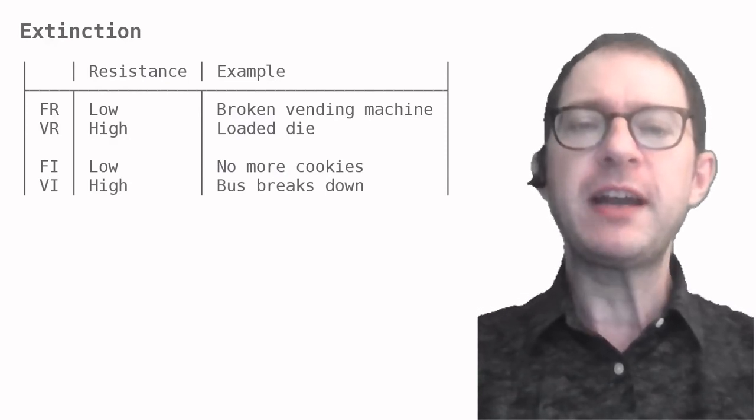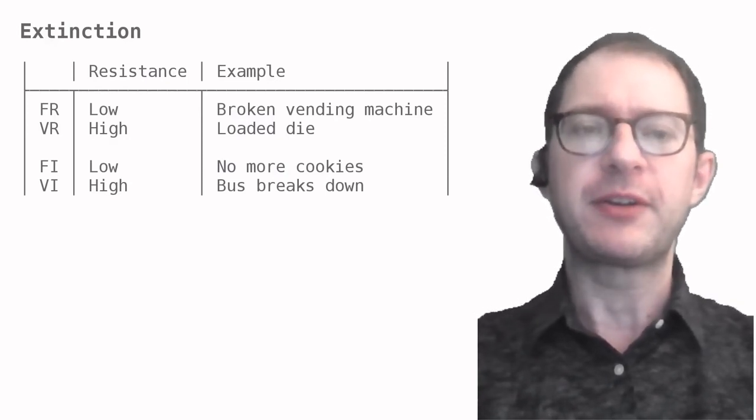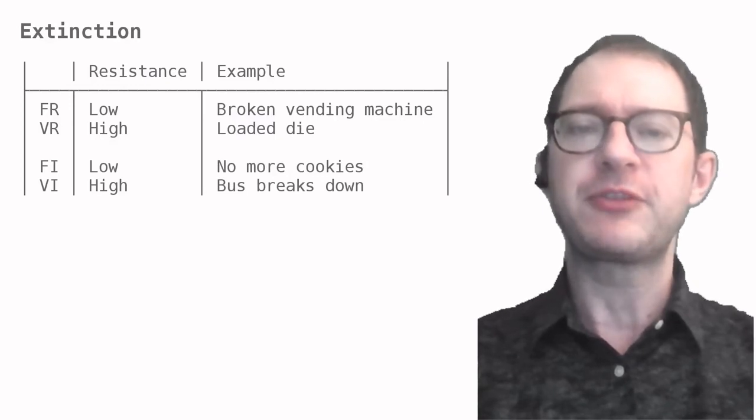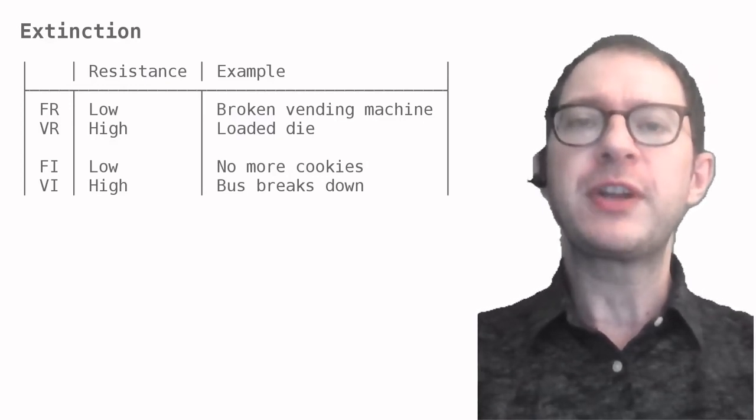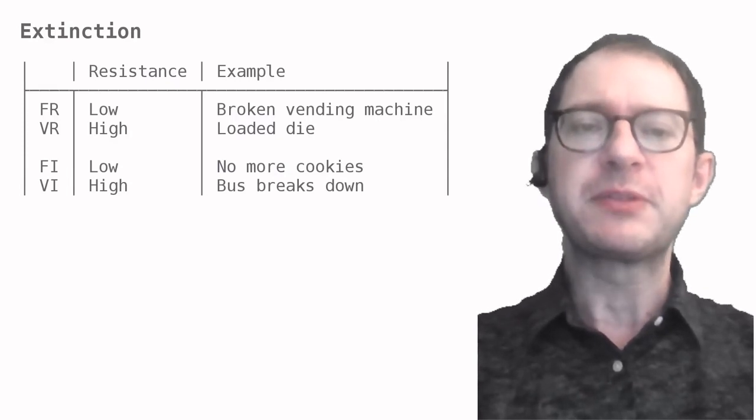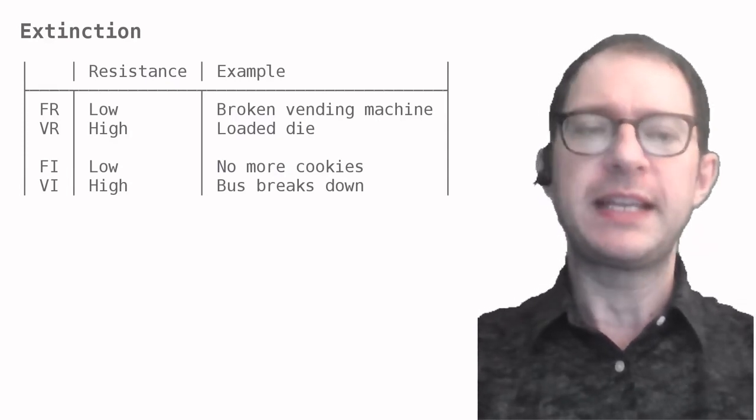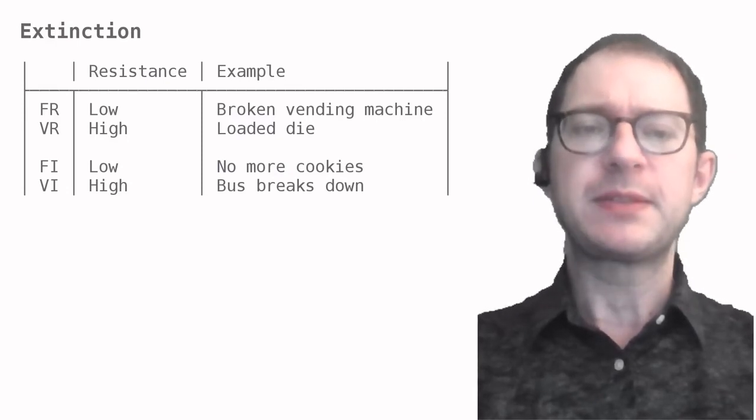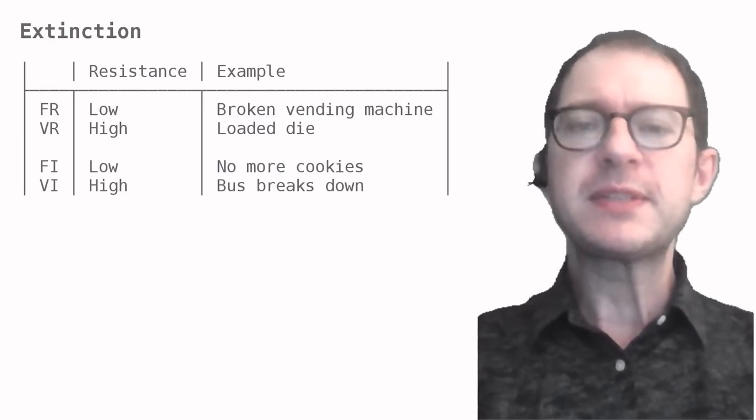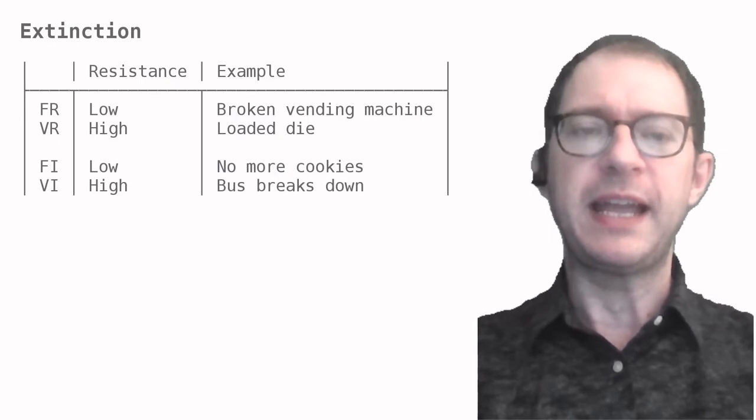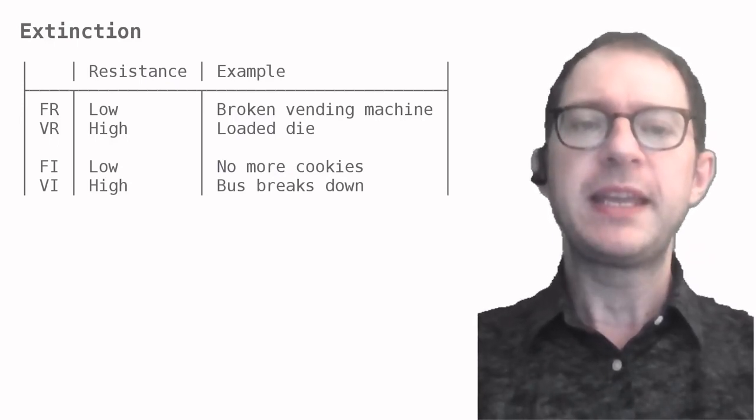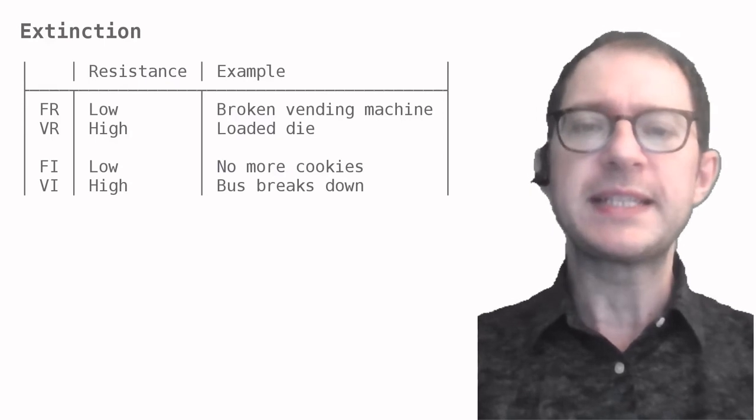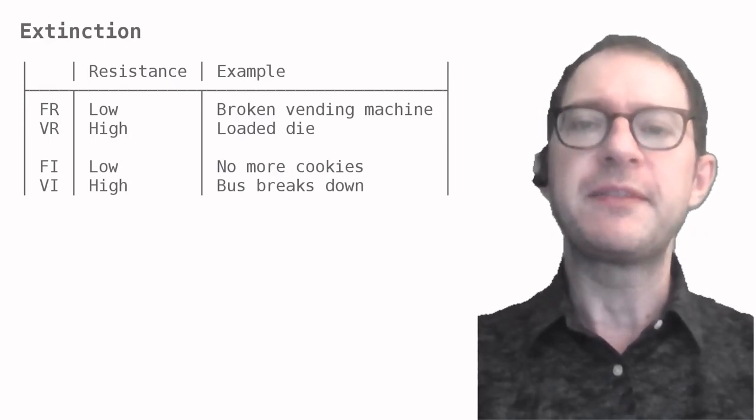On the other hand, VR variable ratio schedules are often very resistant to extinction. Imagine that your die that you're rolling and you're trying to get a six with is rigged, so that it actually never lands on a six. But you still roll many times before giving up. The reason seems to be that even with a regular die, you're used to not winning for long stretches of time. It takes a long time to notice that something is wrong with the rigged die and give up.